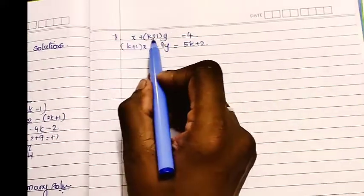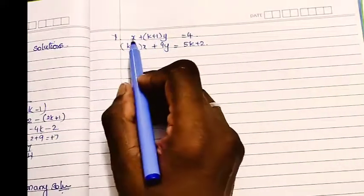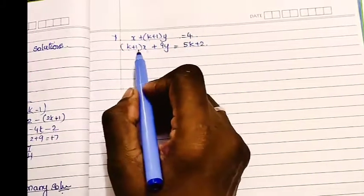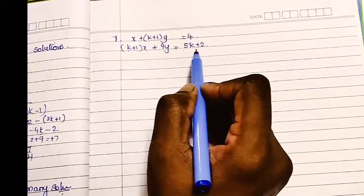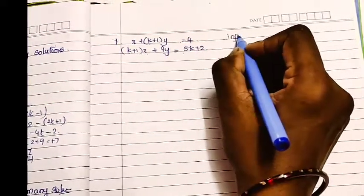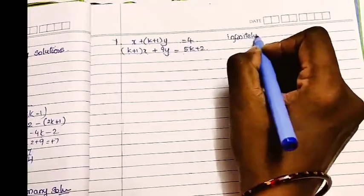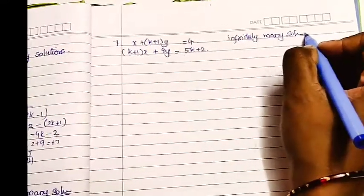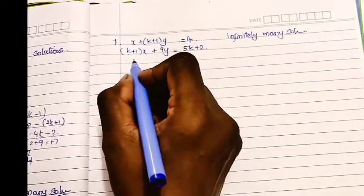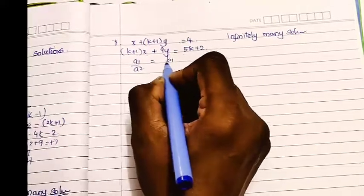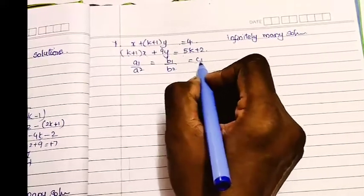Now listen, we are having two solutions, two equations: x plus (k+1)y equals 4, and (k+1)x plus 9y equals 5k plus 2. They are having infinitely many solutions, so a1 by a2 is equal to b1 by b2 is equal to c1 by c2.